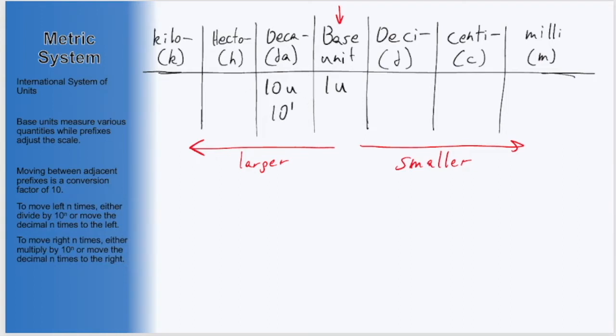Then moving another space to the left for hecto, this will now be 100 base units. And I'll write that 100 as 10 squared. And finally, kilo will be 1000 of our base units, which I will write as 10 to the third power.